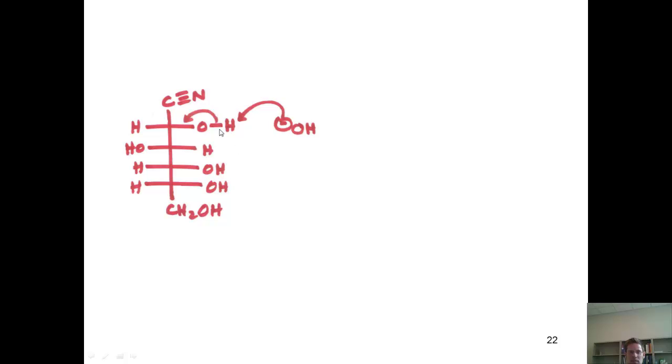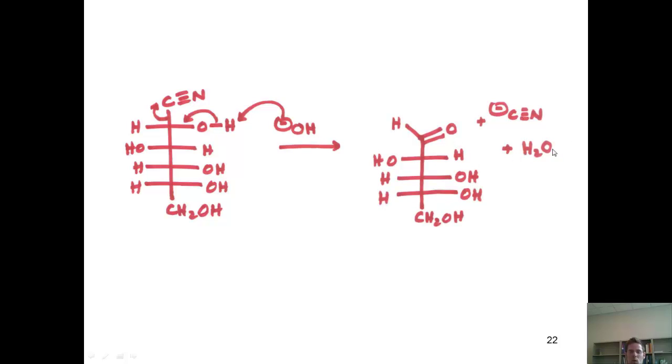When it does that, it kicks off cyanide as a leaving group and gives me this product, cyanide, and water. So, once again, you can see through this whole sequence the effective result is that I've taken my initial sugar, my aldose, and removed one carbon in the chain and generated an aldose that is one carbon shorter.